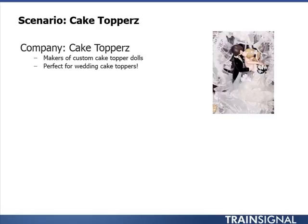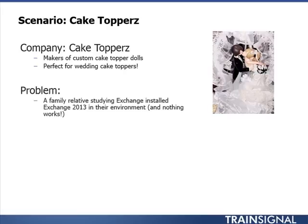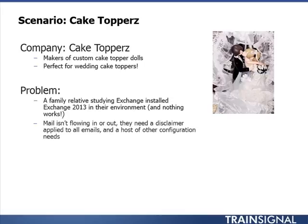The company we're going to be looking into today is called Cake Toppers — makers of custom cake topper dolls perfect for wedding cake toppers. The problem they're having is that a family relative studying Exchange installed Exchange 2013 in their environment and nothing works. Mail isn't flowing in or out. They need a disclaimer applied to all emails, and they have a host of other configuration needs. They are a domain.local configuration, meaning their domain is a .local, not a .com, on the inside Active Directory side. This is a common configuration.